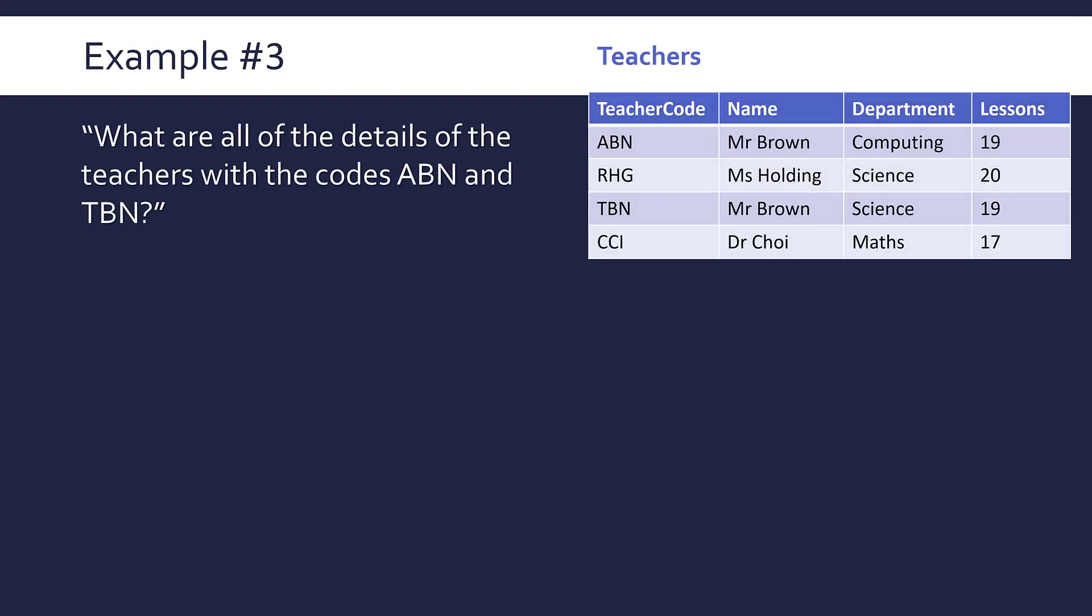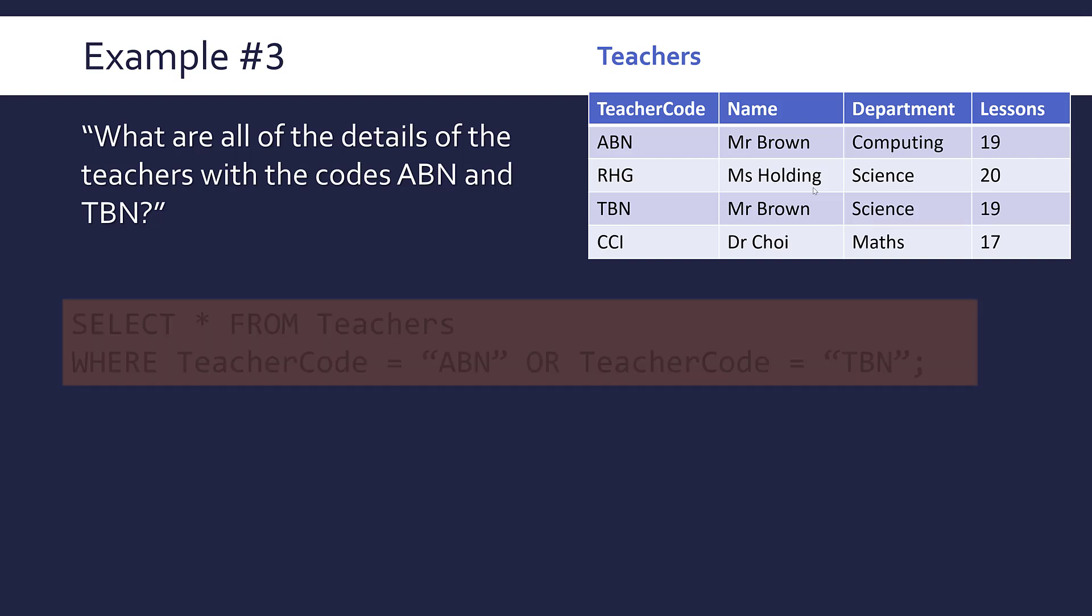Using a table from a previous video, let's look at another example with a new set of data. I've got a teachers table here with four teachers and four fields. My question is: what are all of the details of the teachers with the codes ABN and TBN? If I was constructing an SQL select query here, first things to think about is what comes after select? Select what? It says all of the details, meaning I need all four fields. Now I could go select teacher code, name, department, lessons, but not a great use of me writing down. There is a shorthand which I want you to know about, which is a star.